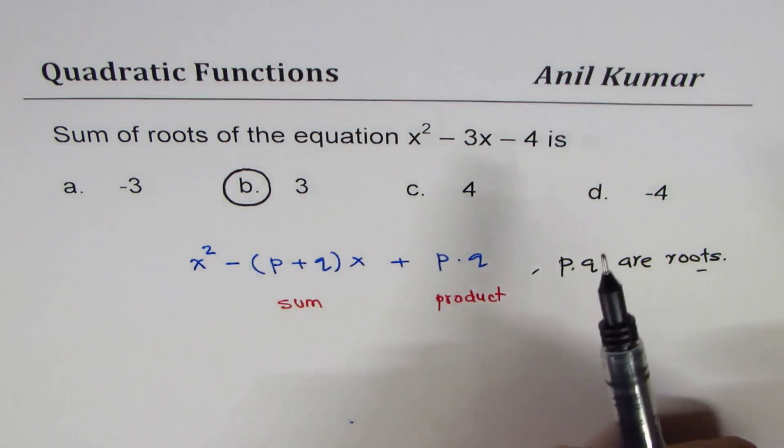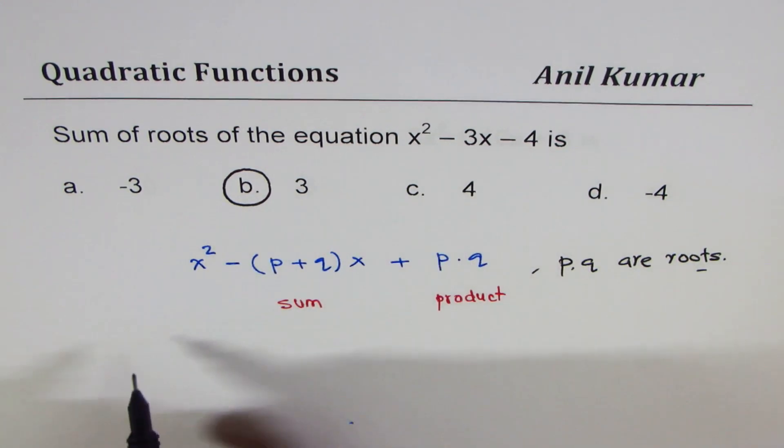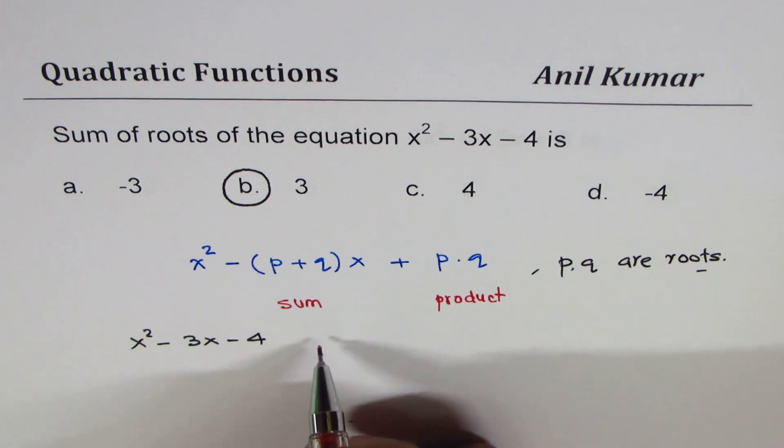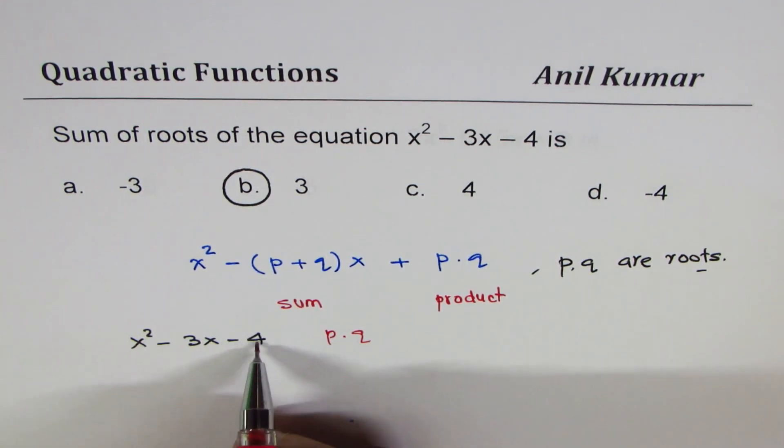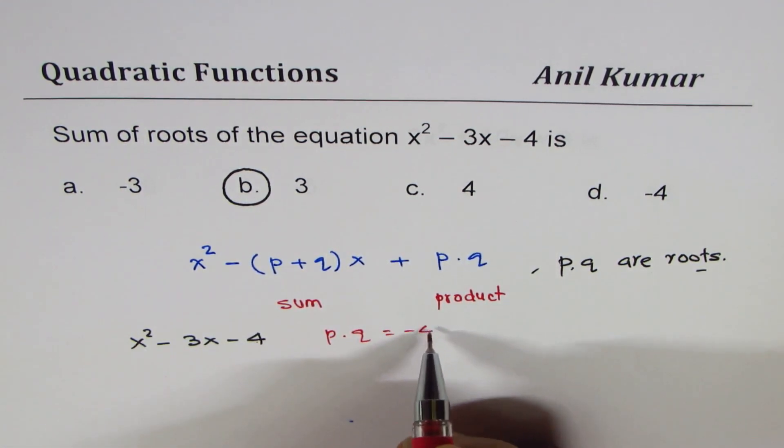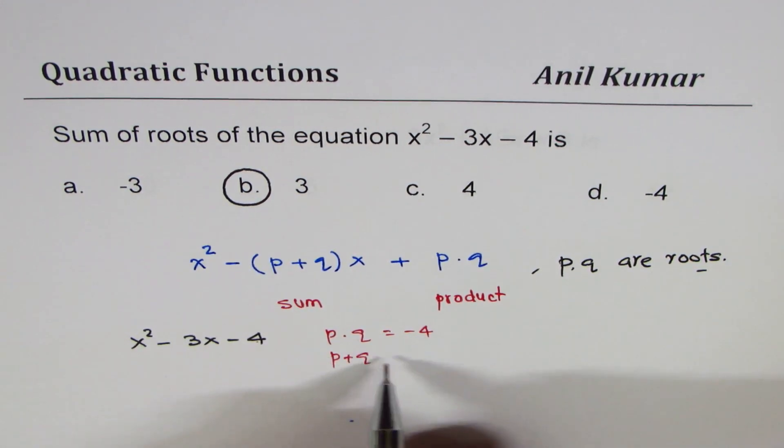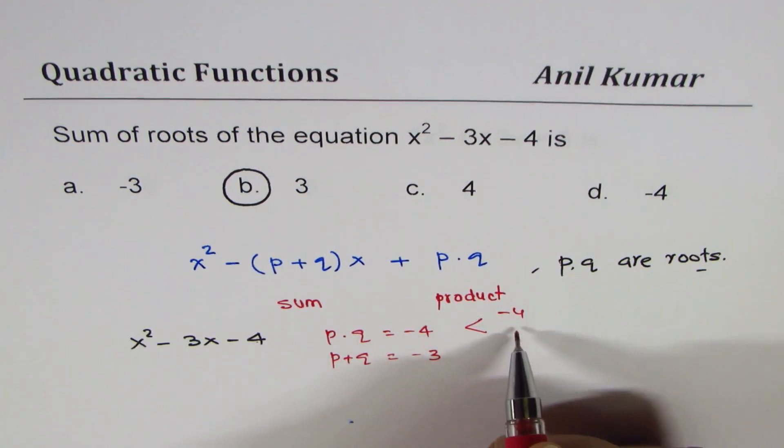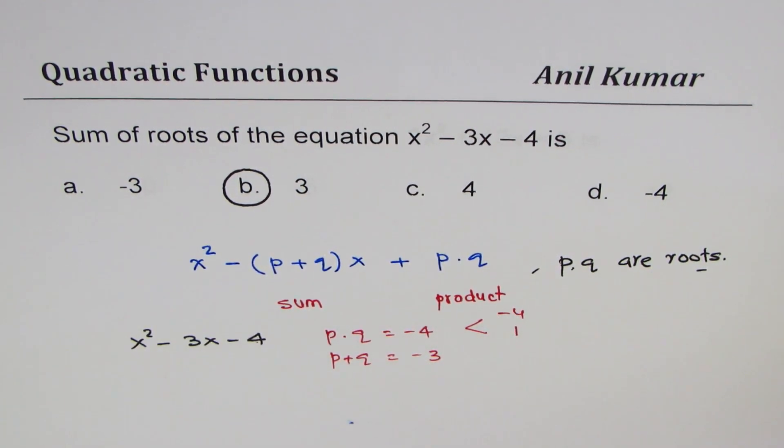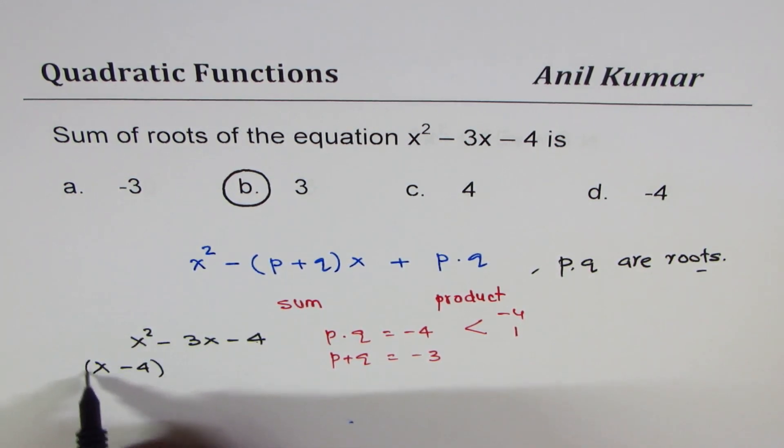The other thing is that you could really factor it right. So let's factor. We have x squared minus 3x minus 4. We are looking for sum and product right. So two numbers let's say p and q which will give minus 4. And if we sum we should get minus 3. So the two numbers are minus 4 and 1, right.